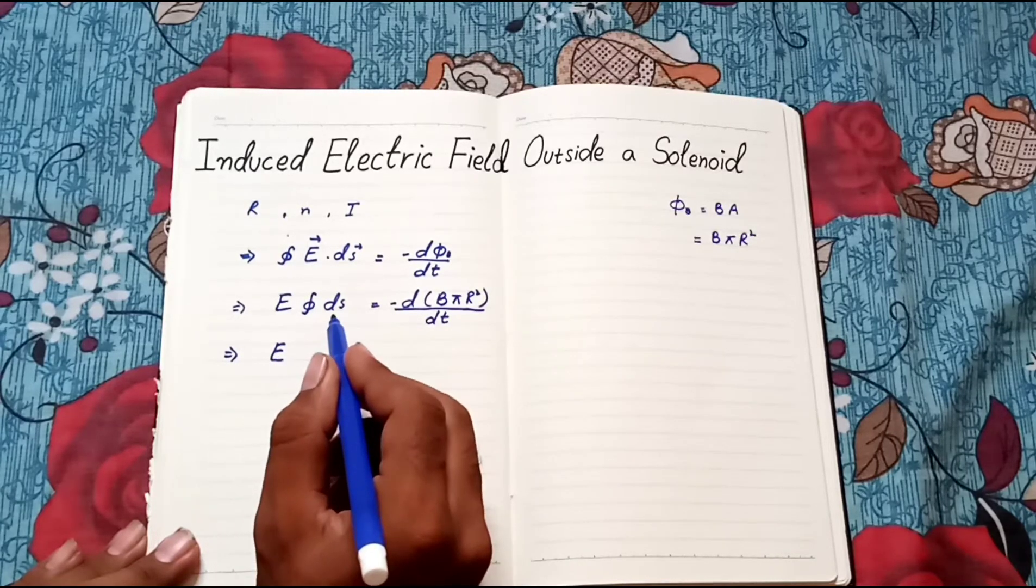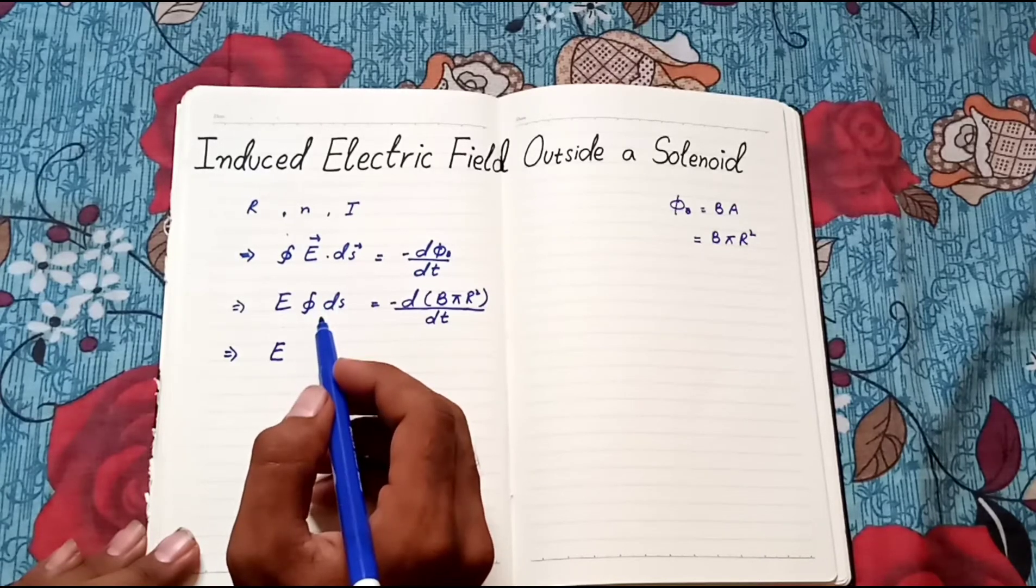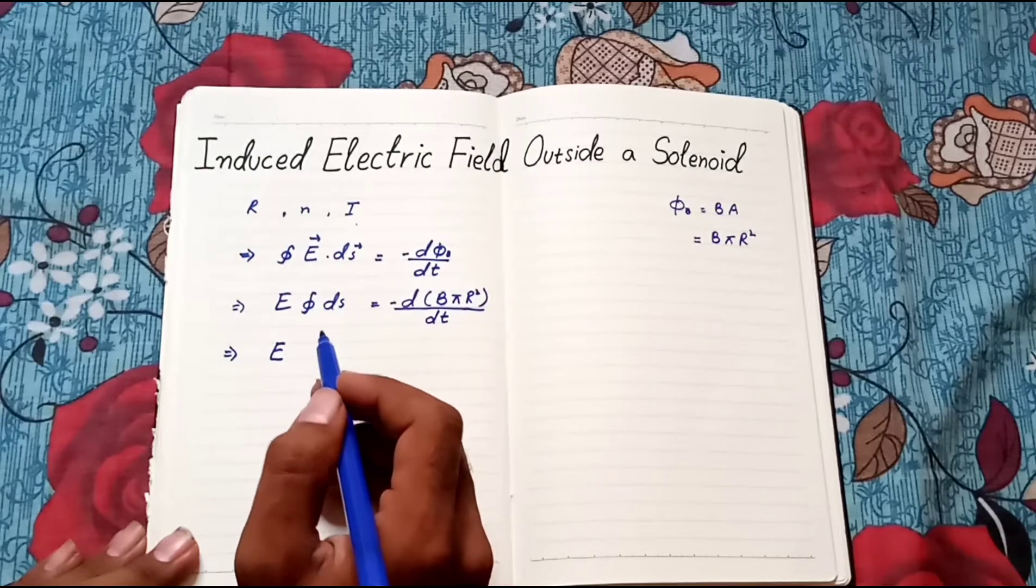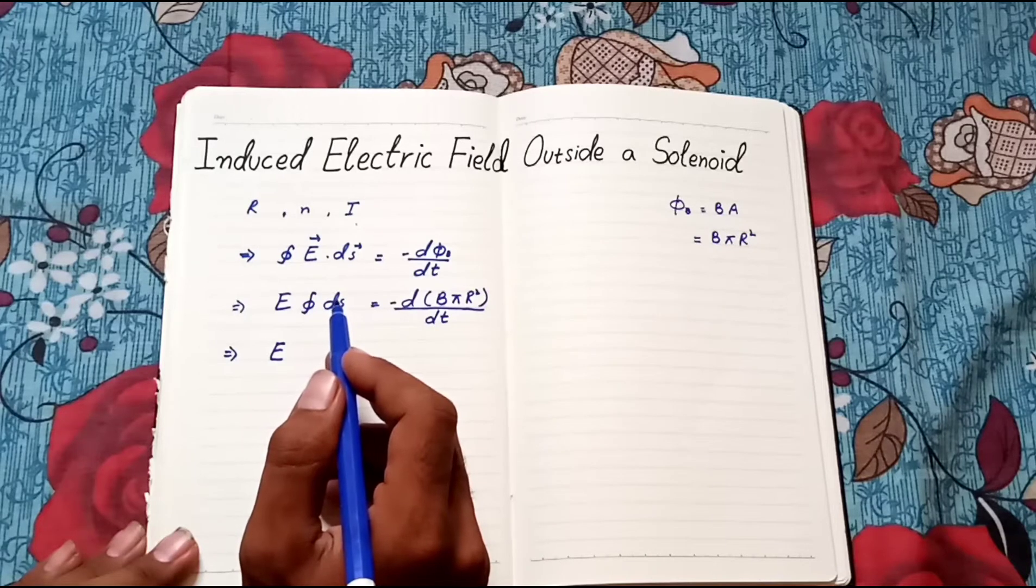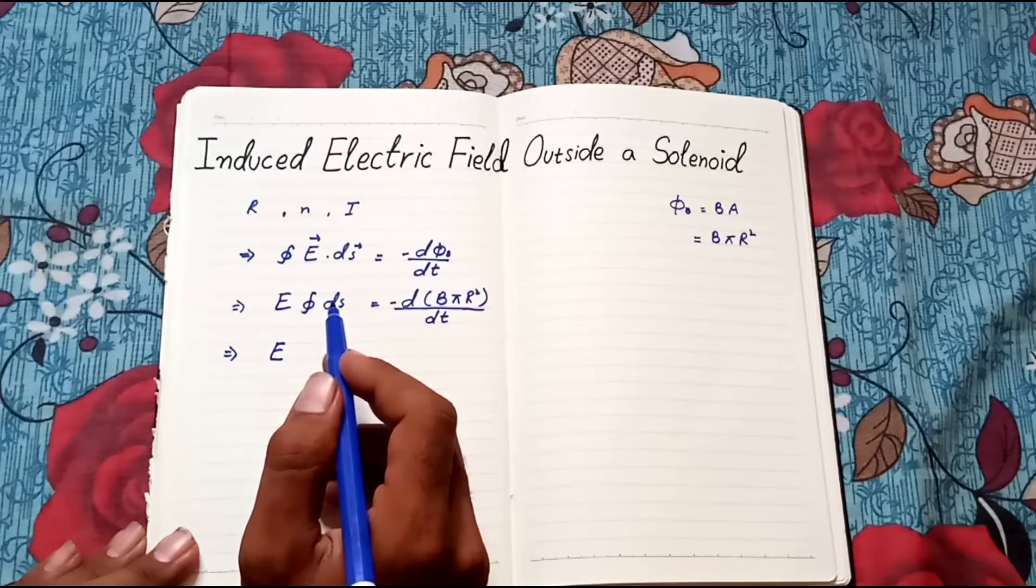Here ds is length element. Since in solenoid wire is in circular loop, therefore length element is of circuit which is equal to its circumference, that is 2 pi r.